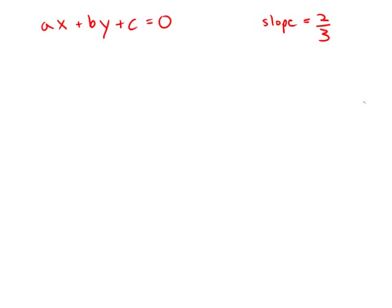In the xy-plane, the line with equation ax + by + c = 0, where a times b times c is not equal to zero, has a slope of 2/3. What is the value of b?